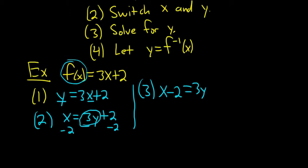And then to finish, we just divide everything by 3. The 3s cancel. So this y, I'm going to write it on the left-hand side. So y equals x minus 2 over 3.